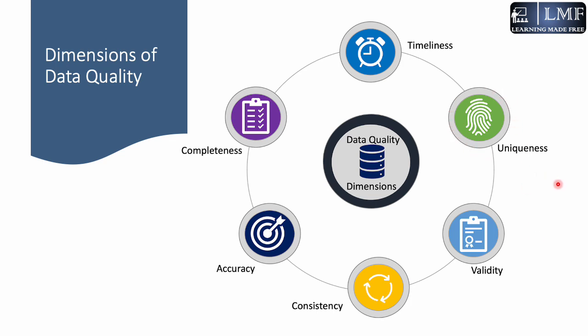The next element is uniqueness. As the name suggests, this dimension is the measure of redundancy of the same record in the dataset. High quality data from the lens of uniqueness should be deduplicated — it should not have any redundant entities or duplicates in the system.